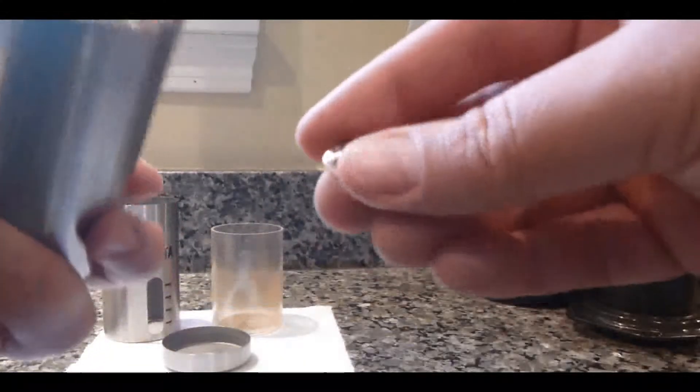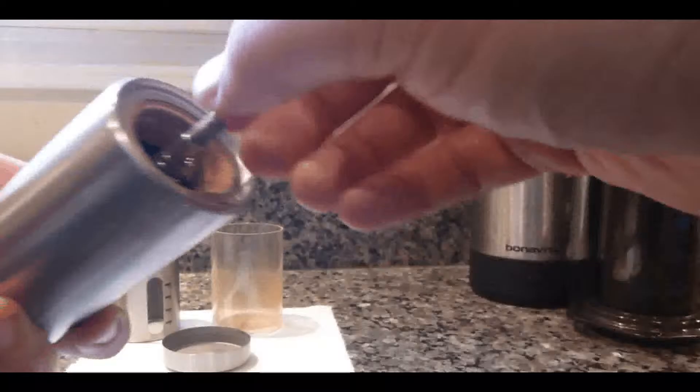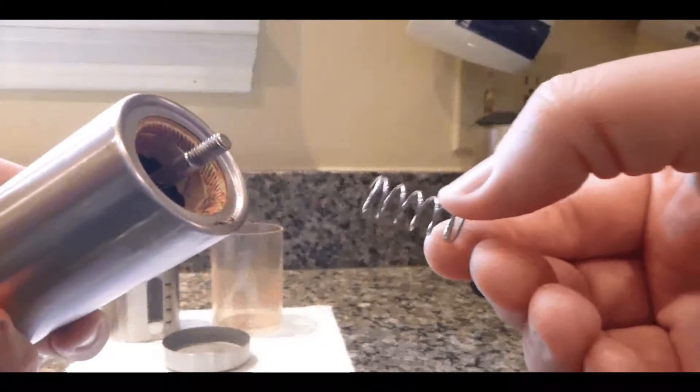Now you can see the interior. There are a few pieces that you'll want to be careful not to lose: the small metal ring as well as the spring should be set aside.